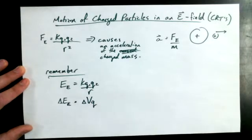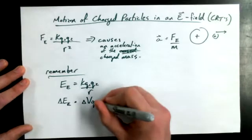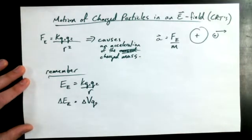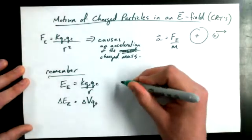And the change in electric potential energy could also be written as electric potential difference, or voltage, times the charge of the object that's moving. We can call it Q2. Some people call it Q-test.